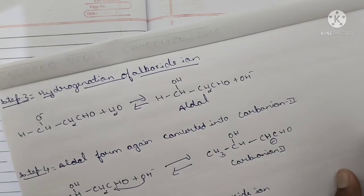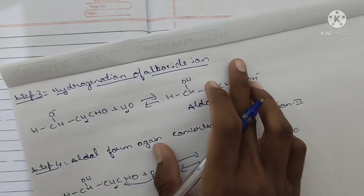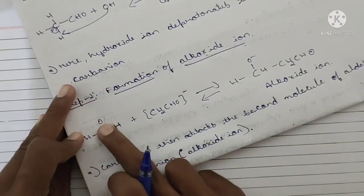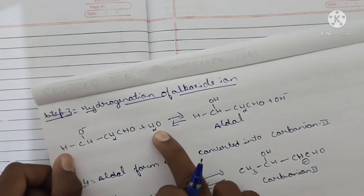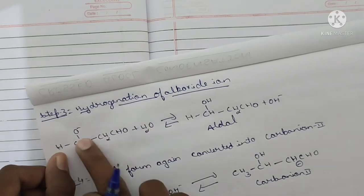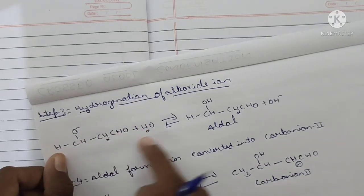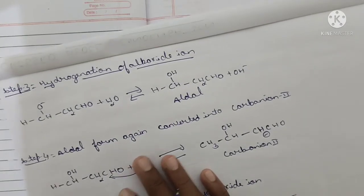Step three: hydration — addition of a water molecule to the alkoxide ion. The double bond has shifted onto the O⁻. The O⁻ (minus charge) abstracts one H⁺ from the water molecule, the same process as before. This gives OH, and the remaining product is CH2CHO, regenerating OH⁻. Then aldol is formed: the aldol product appears after addition of water to the alkoxide ion.